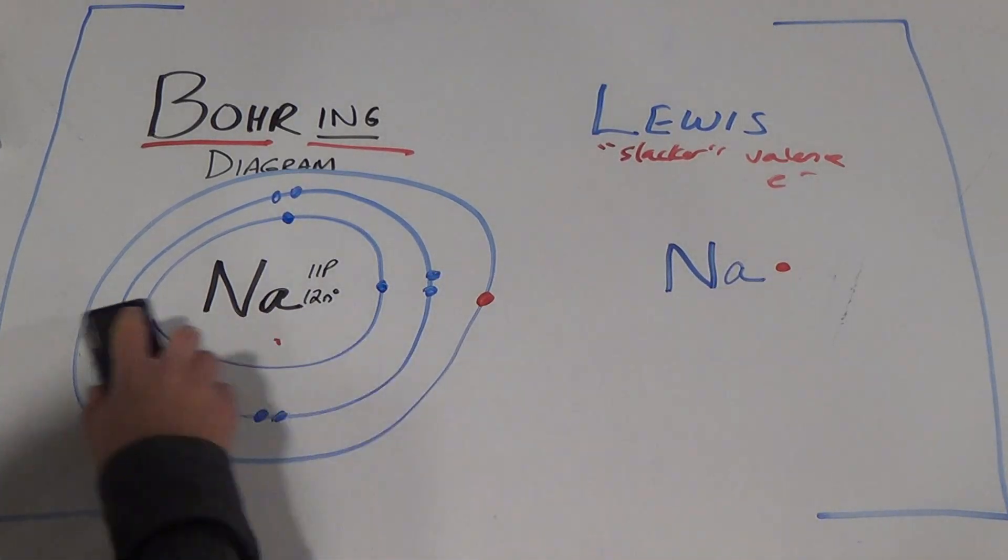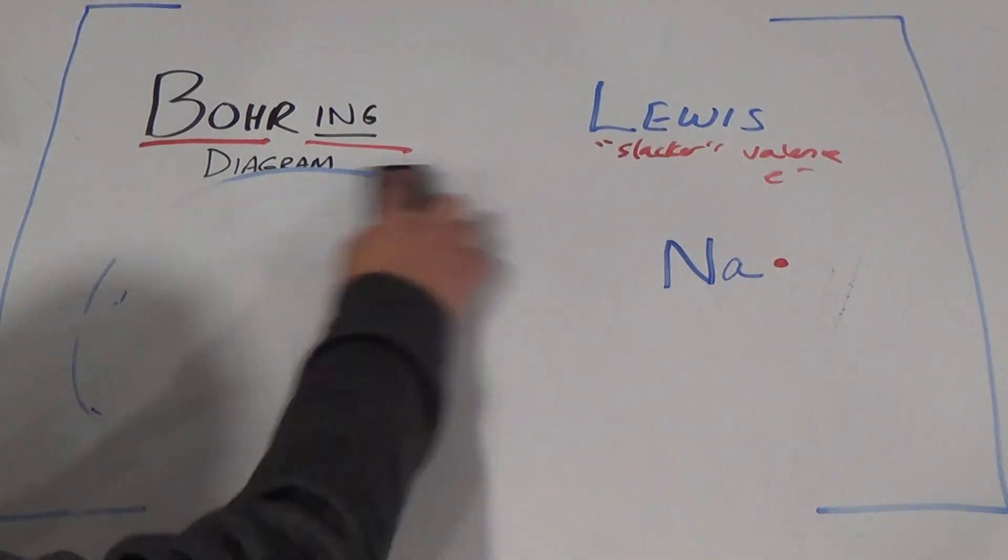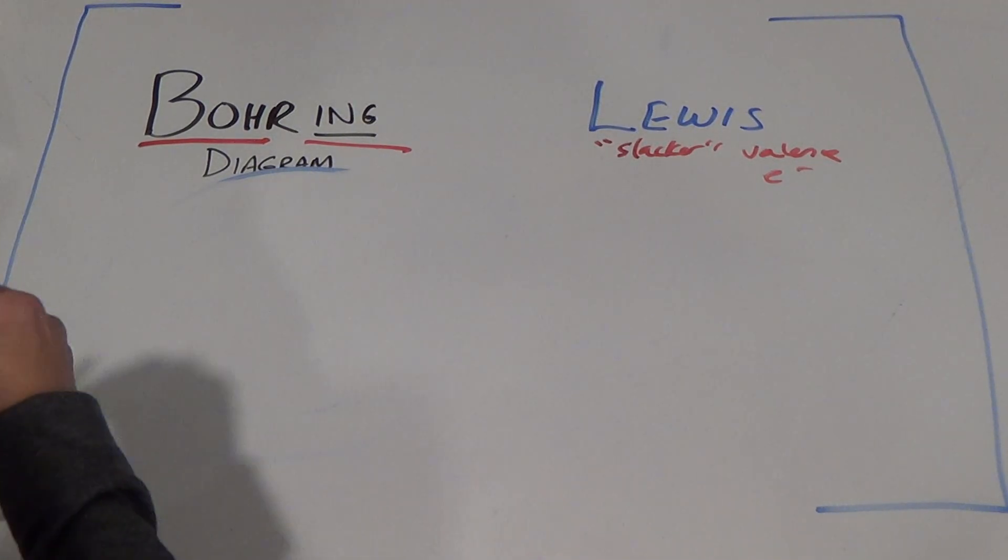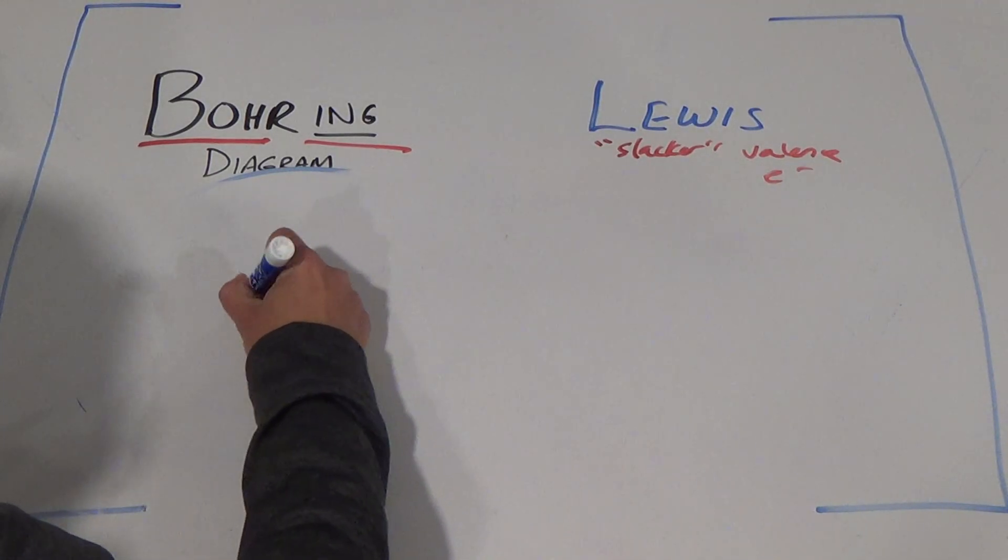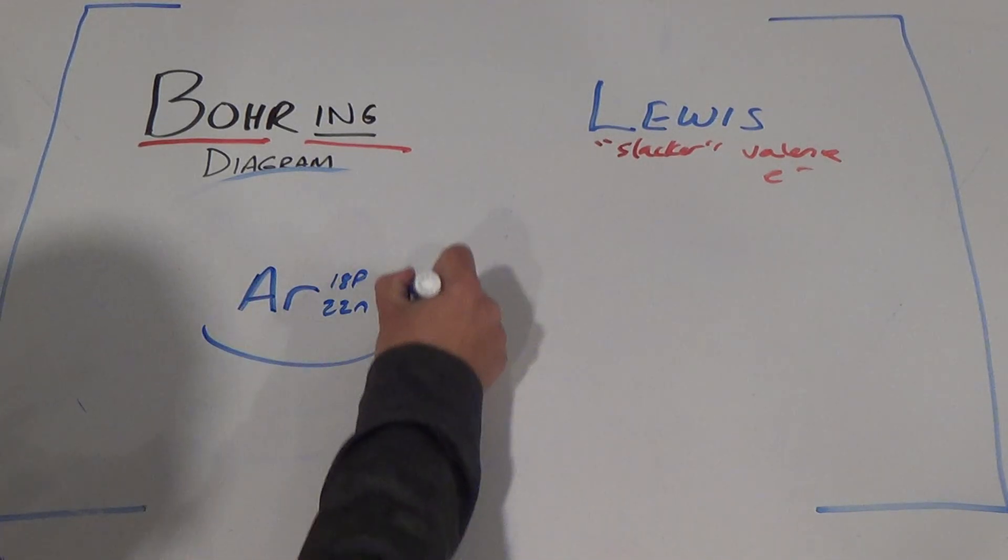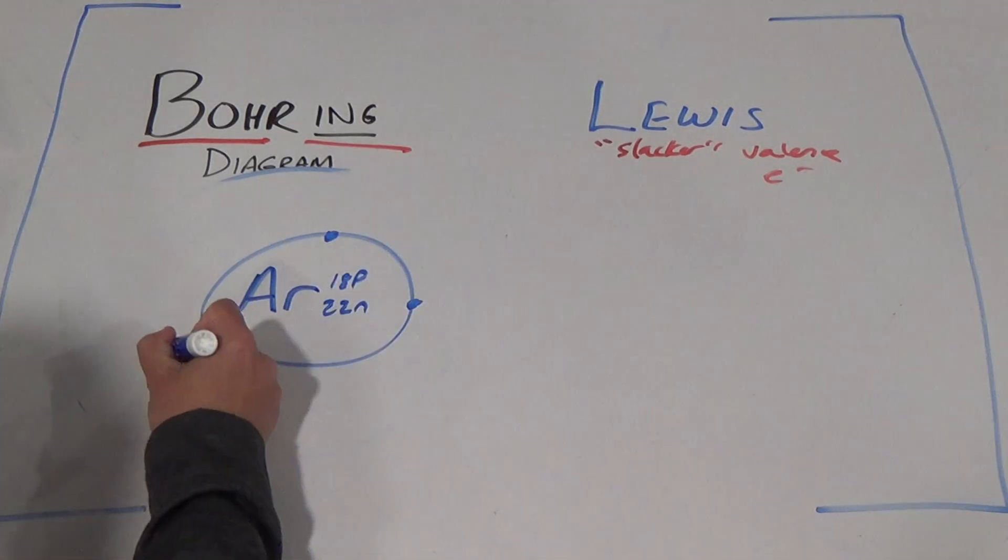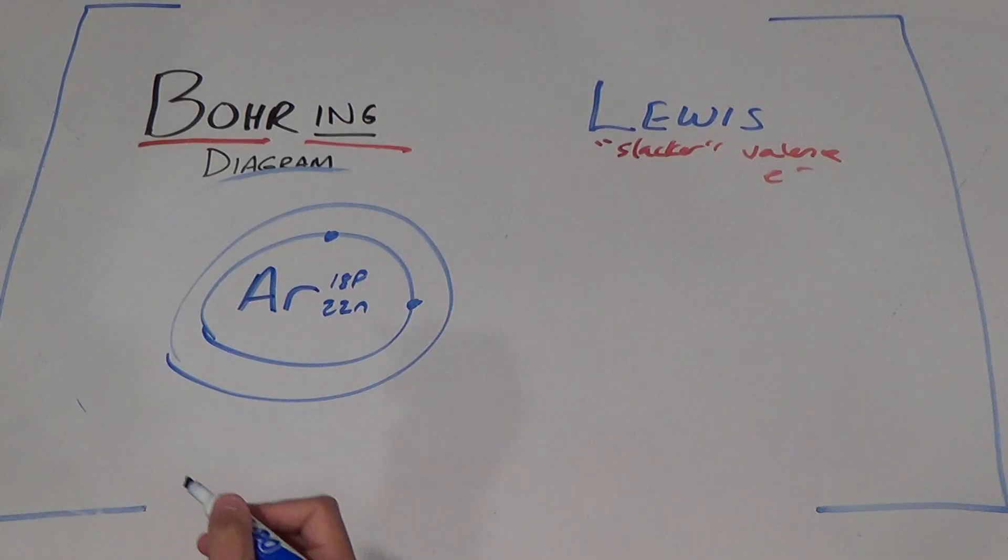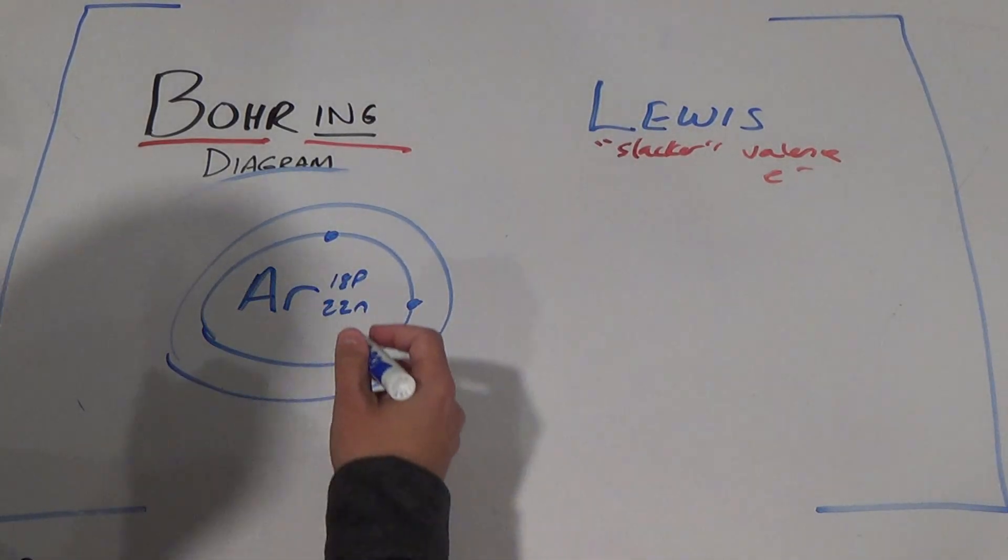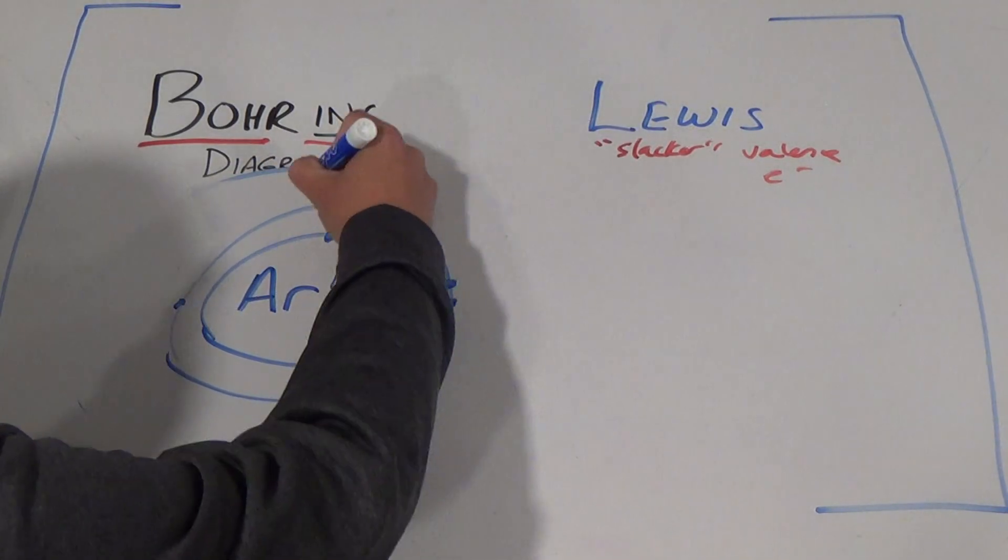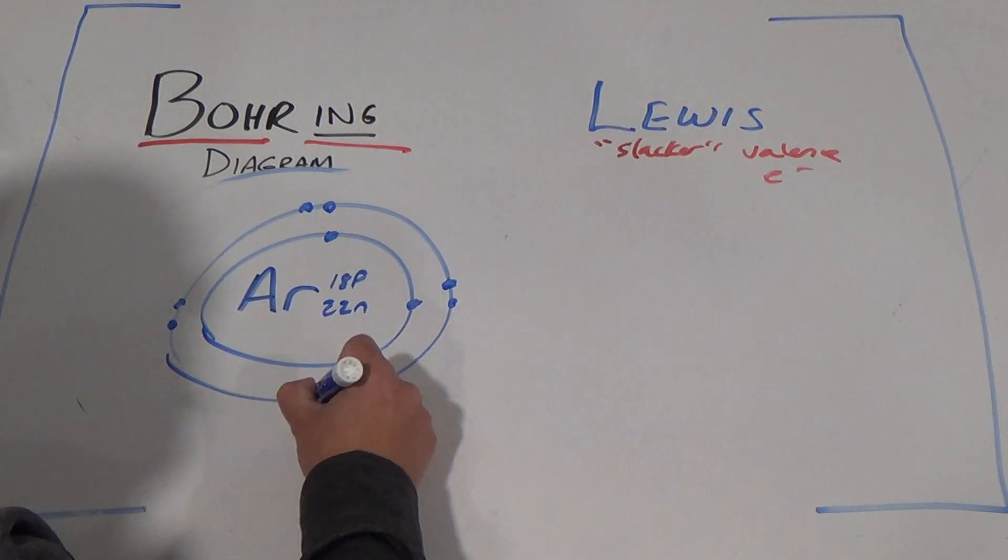Let's do argon. Here's argon. I'm going to go a little faster. Argon's got 18 protons, 22 neutrons. Two in the first. Oh my gosh, come on. How about drawing like francium? Could you imagine period seven, seven levels of this? Good Lord. One, two, three, four, five, six, seven, eight. Are we there yet? No.